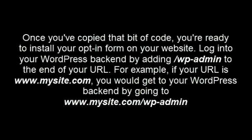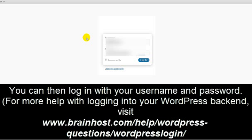Installing your form on your site. Once you've copied that bit of code, you're ready to install your opt-in form on your website. Log into your WordPress backend by adding /wp-admin to the end of your URL. For example, if your URL is www.mysite.com, you would go to www.mysite.com/wp-admin, then log in with your username and password.